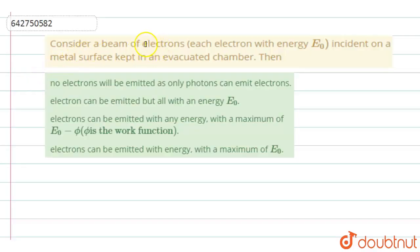Consider a beam of electrons. Each electron with energy E0 is incident on a metal surface kept in an evacuated chamber. So then what happens among these four options you have to say. When you are making a beam of electrons incident on a metal surface which is kept in an evacuated chamber,